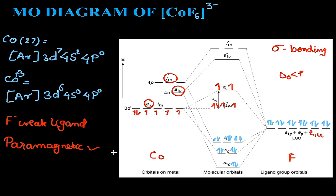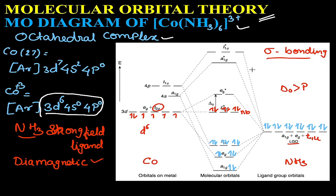Since this complex has four unpaired electrons, it is a paramagnetic complex. With a weak field ligand, this is a high spin complex. To summarize: high spin complex with a weak field ligand (CoF6^3-) and low spin complex with a strong field ligand (Co(NH3)6^3+). This completes the sigma bonding MO diagrams for both complexes.